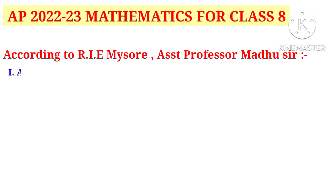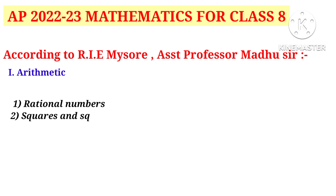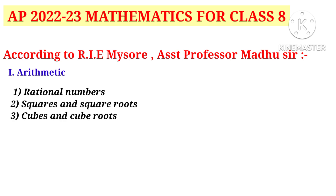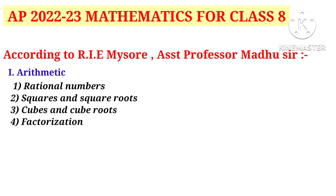The chapters in arithmetic are: Number 1, Rational Numbers; Number 2, Squares and Square Roots; Number 3, Cubes and Cube Roots; Number 4, Factorization; and Number 5, Playing with Numbers.